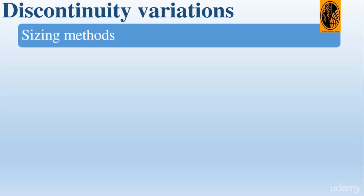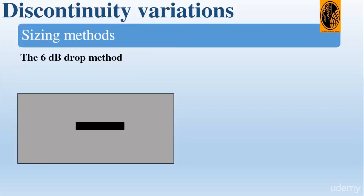Let's see the 6 dB drop method. This method is used for sizing large reflectors. If the probe is moved until the signal amplitude from a reflector drops to half its original screen height, it can be said that the sound beam is half on and half off the reflector. By moving the probe until the signal from the end of the large reflector halves in height, we can estimate that the edge of the reflector is immediately below the center of the probe. This is called the 6 dB drop sizing method because the amplitude drops by half, which corresponds to 6 dB, when the probe is moved to the edge of the large reflector.